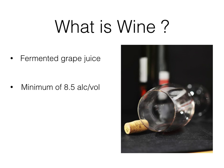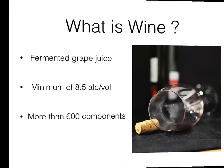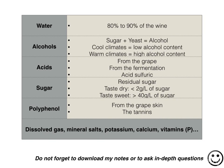There are more than 600 different components in wine, and chemists have yet to discover all of them. The main components are as follows. This is a brief overview — do not worry, as we go through the course, we will go more into details.